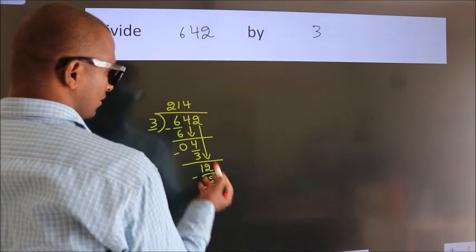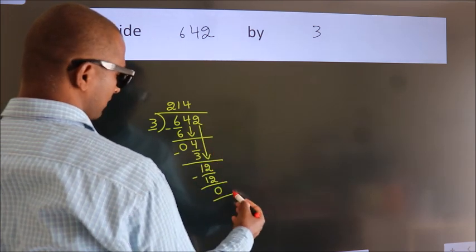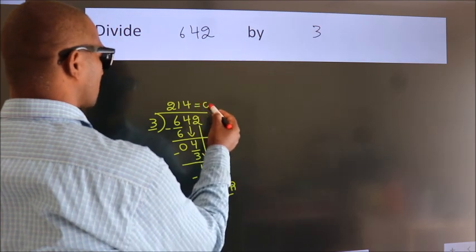After this, no more numbers to bring it down. So we stop here. This is our remainder. This is our quotient.